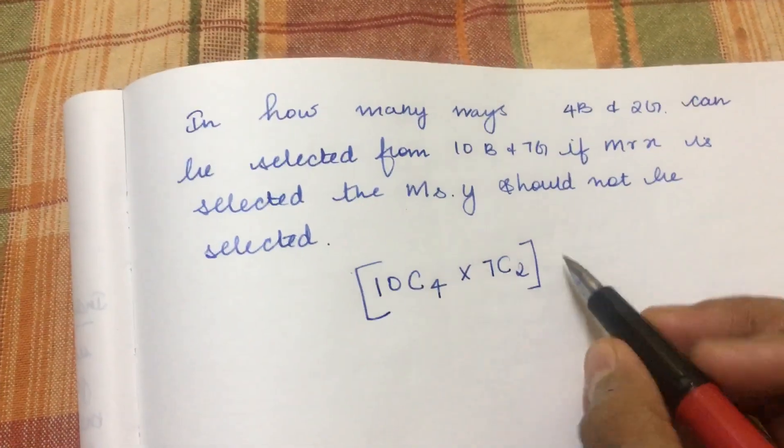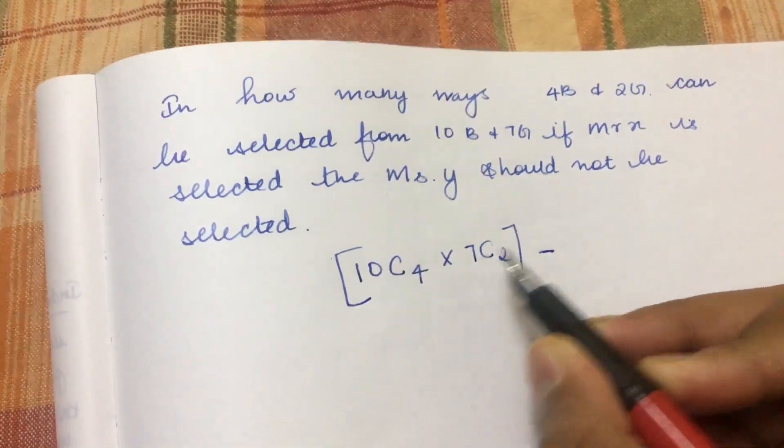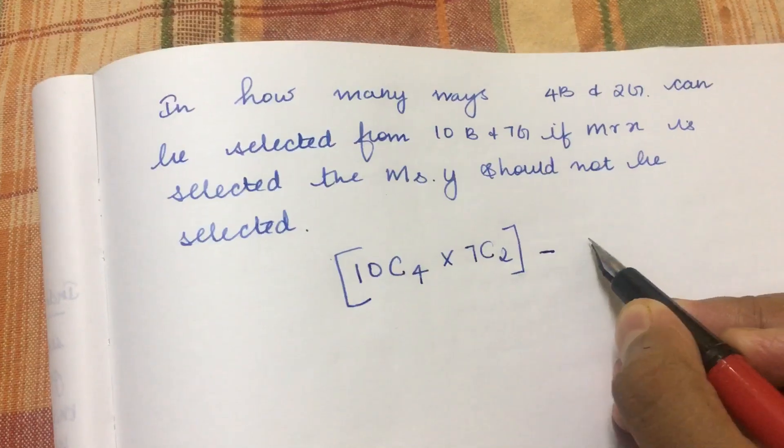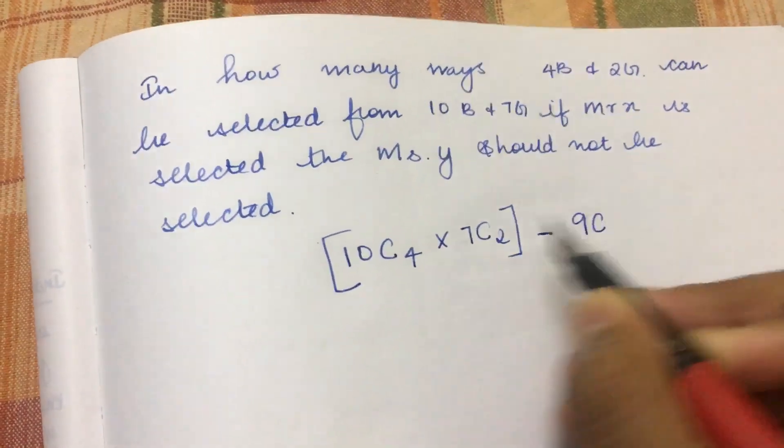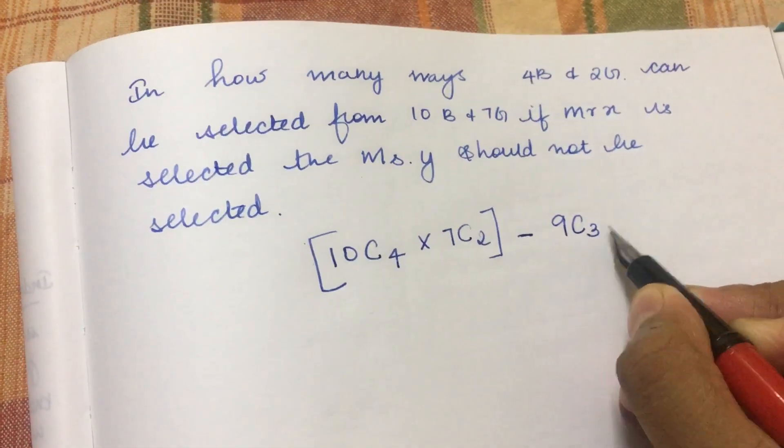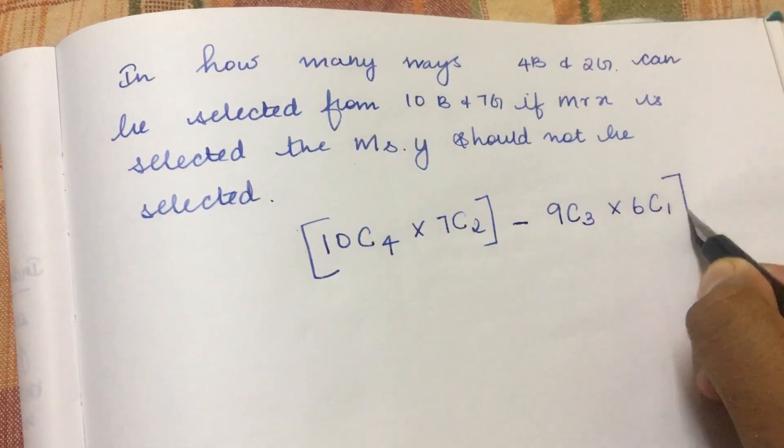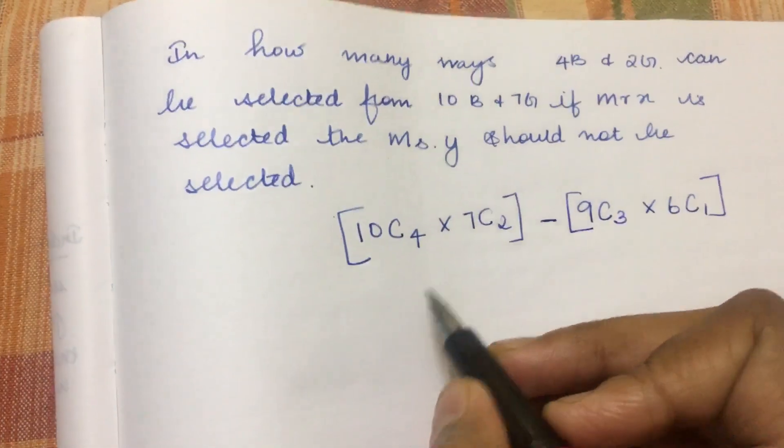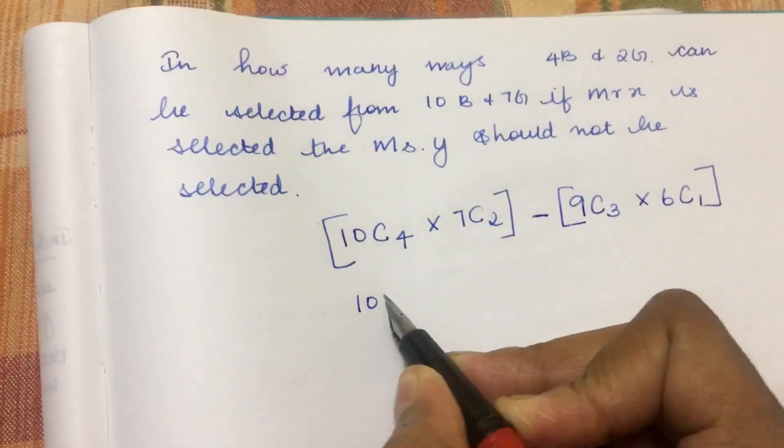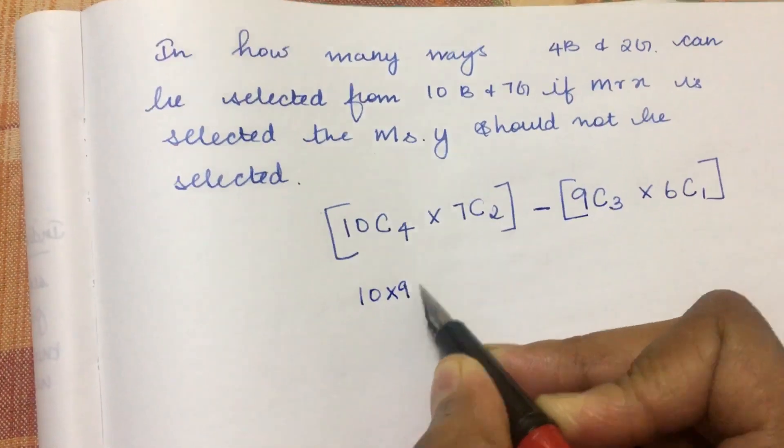So we need to subtract the restricted case. Minus: total 10 becomes 9C4, no wait 9C3 because one is already selected, and 7 becomes 6C1. So the shortcut formula is: 10C4 times 7C2 minus...